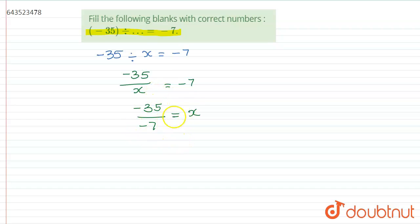So we will find out the value of x by dividing 35 by 7. 7 times 1 is 7, 7 times 5 is 35. Minus divided by minus is plus, so 5 is equal to x.